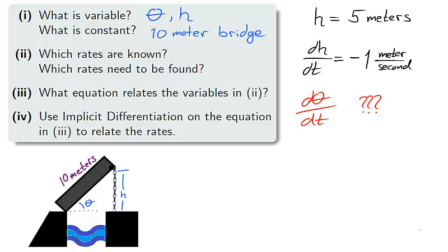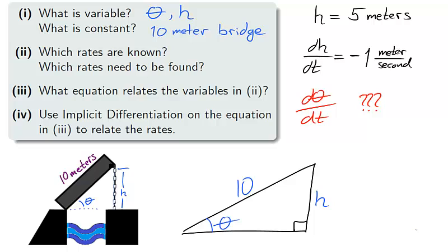The third question, what equation relates the variables, can be answered by considering the geometry of the situation. The drawbridge and chain outline a right triangle with hypotenuse length 10, angle theta, and opposite length h. Therefore, a good equation is sine theta equals h over 10.